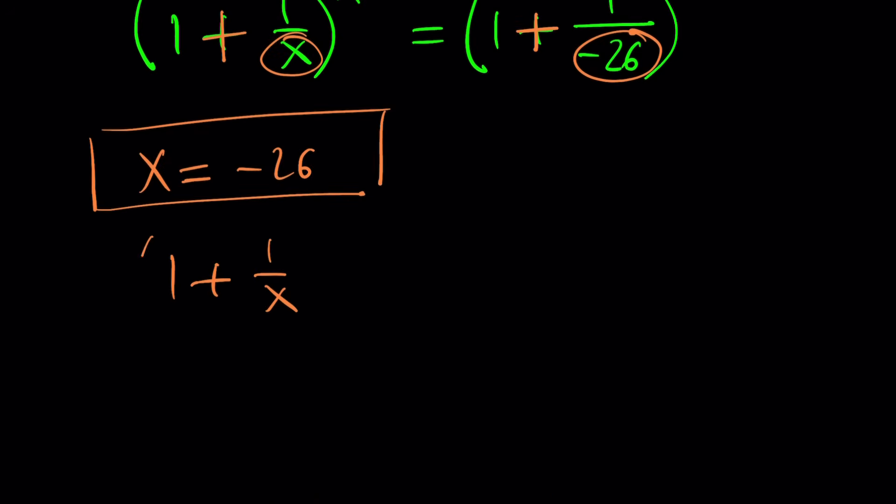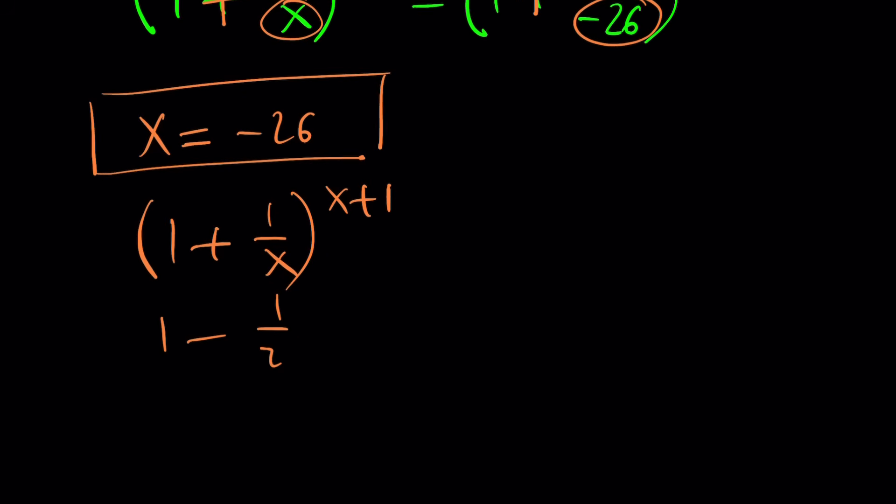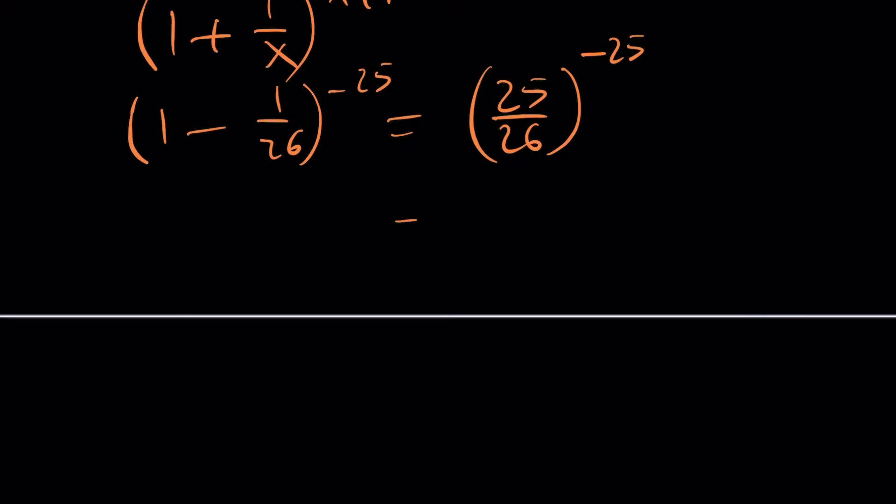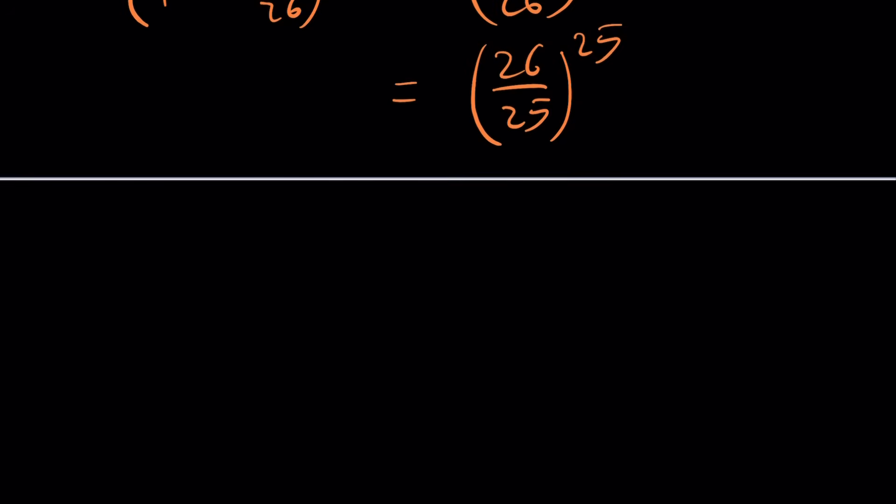(1 + 1/x)^(x+1). And now, if x is negative 26, you're going to get (1 - 1/26)^(-25). This will be (25/26)^(-25). And then you can now write it as (26/25)^25, because you can flip that to make the exponent positive.